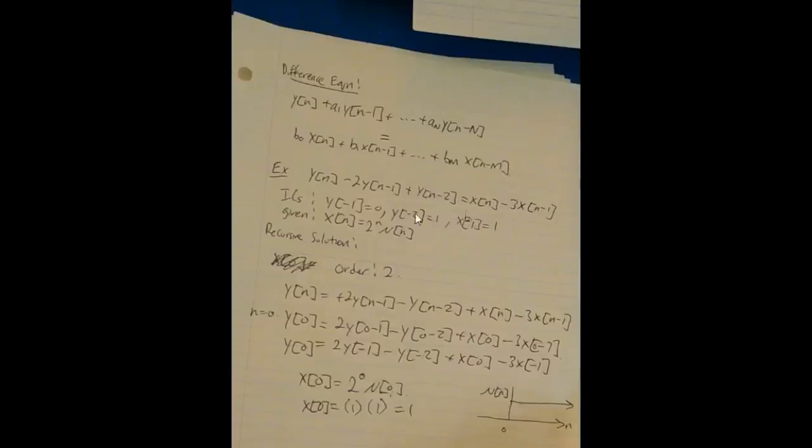So the example below is we're given y(n) - 2*y(n-1) + y(n-2) = x(n) - 3*x(n-1). We're also given the initial conditions that y(-1) = 0, y(-2) = 1, x(-1) = 1, and we're also given the equation for x(n).